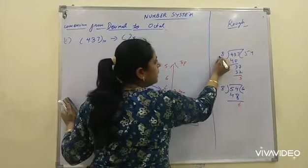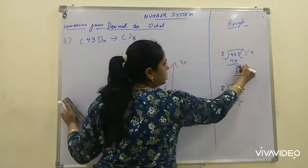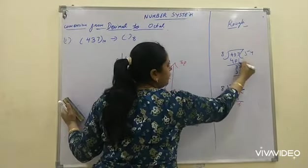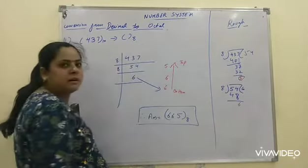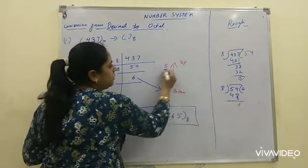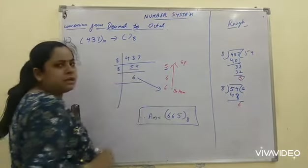When we divide 437 by 8, 8 times 5 is 40. We will copy this 7. 8 times 4 is 32 and remainder which we will get is 5. We will write remainder here and quotient here.